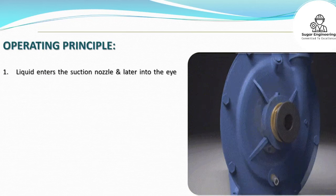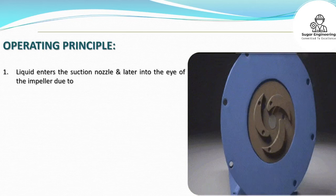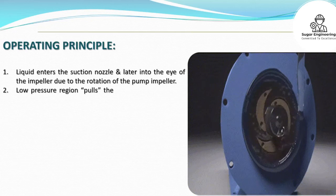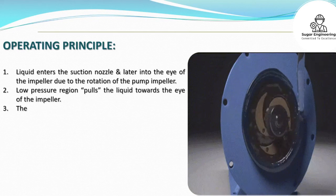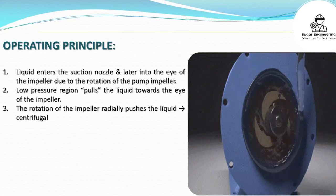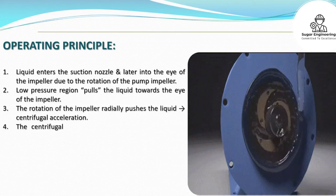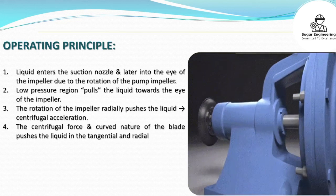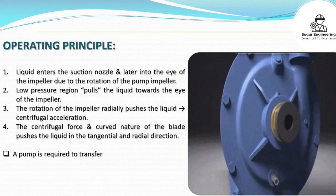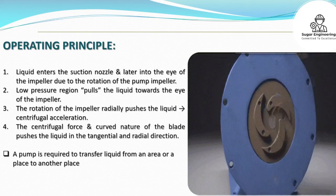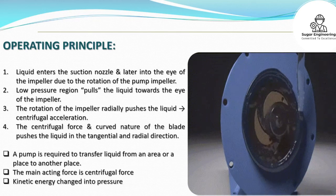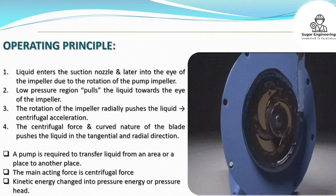Liquid enters the suction nozzle and then into the eye of the impeller due to the rotation of the pump impeller. The low-pressure region pulls the liquid towards the eye of the impeller. The rotation of the impeller radially pushes the liquid outward via centrifugal acceleration. The centrifugal force and the curved nature of the blades push the liquid in the tangential and radial direction.